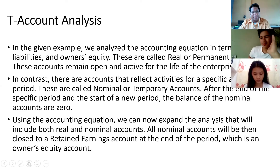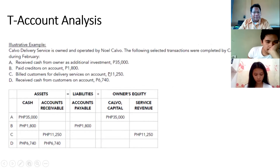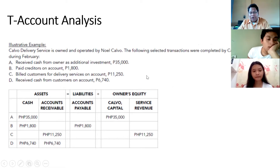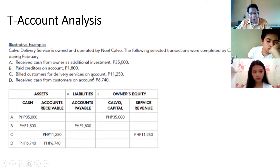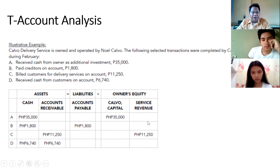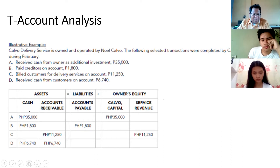There's also a mention of real or permanent accounts, and we also mentioned nominal or temporary accounts. This table is similar to what was created in Microsoft Excel. For your major exam, you'll create something like this. Before you create this, it is highly suggested that you finish the journal entries first — so you know how many assets, liabilities, and owner's equity account titles are included, and avoid having to add columns later.